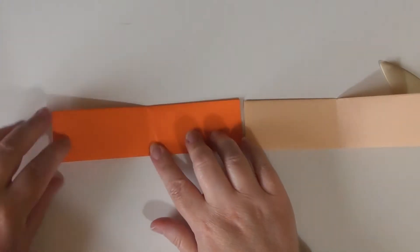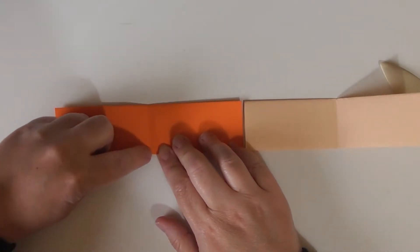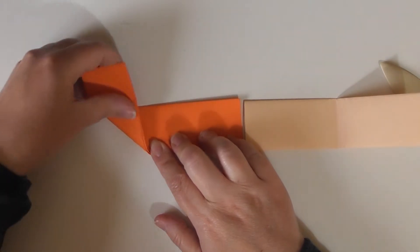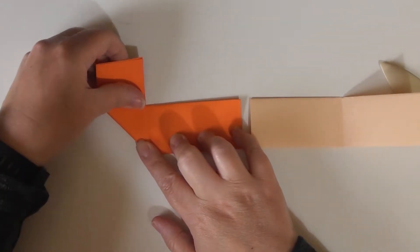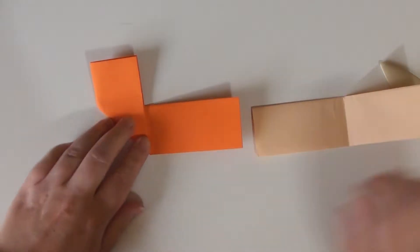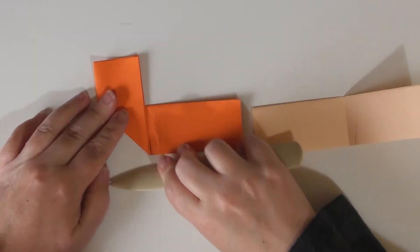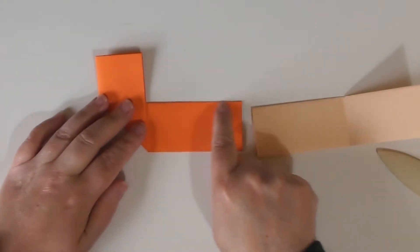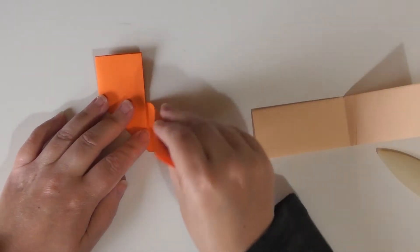Now for this one, we're going to fold this edge here. So it goes along that center line we just created. So we're folding this up. And then we're going to fold this top edge along that center edge. So we're folding it down.